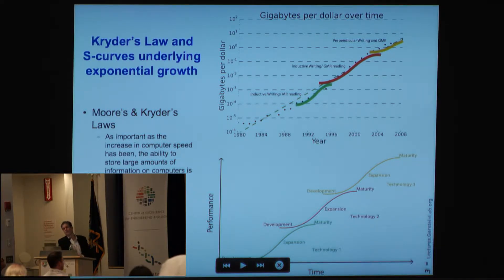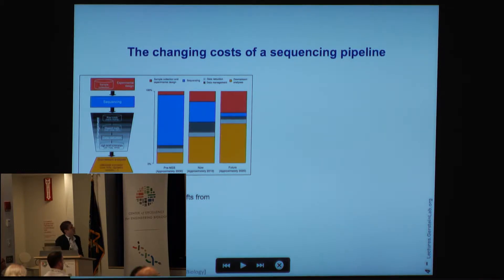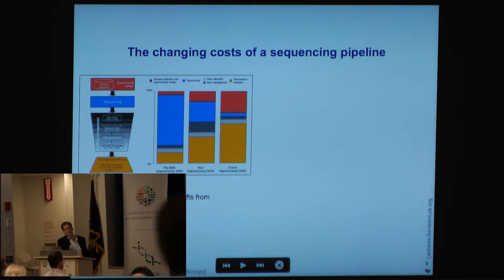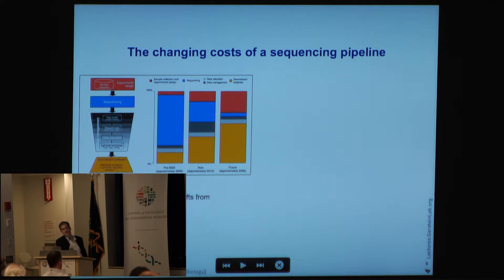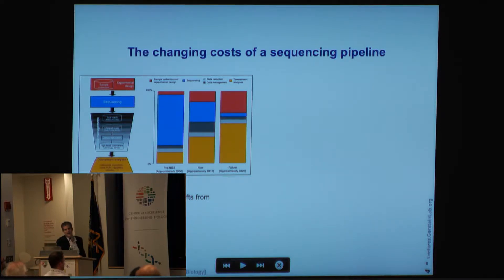Kryder's Law or Moore's Law phenomena obviously governs much of what we see in the computer world, and I believe it also governs what we see in the sequencing world. The question is how do these two scaling behaviors come together? Looking at the cost of a sequencing experiment around 2000 when the human genome was done, this schematic shows that most of the cost went into the sequencing itself — very much like when photography began, where most of the money went into making the photograph — with smaller amounts going into sample acquisition and downstream analysis.